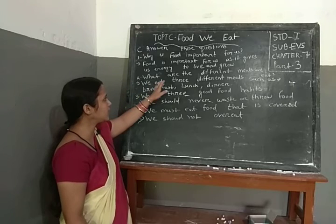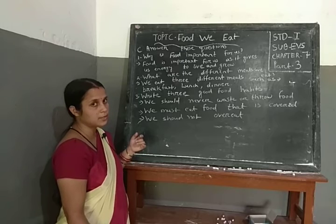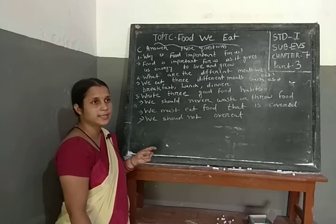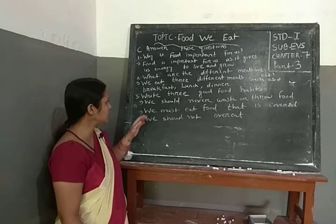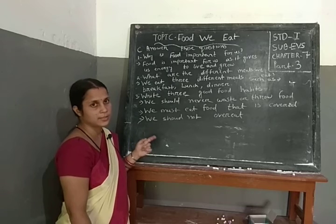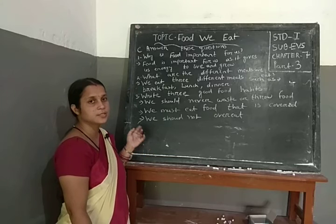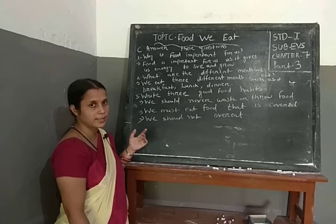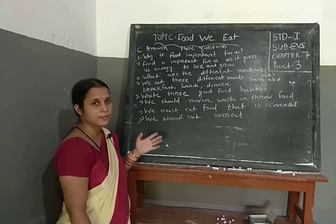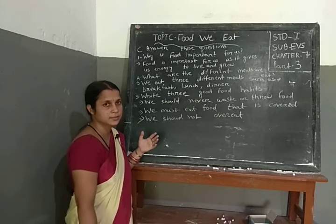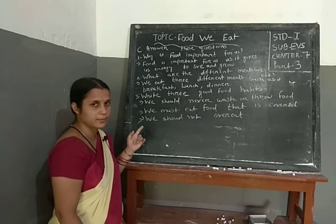Come to question number 2: what are the different meals we eat? We eat three different meals in a day — breakfast, lunch, and dinner. The food we eat in the morning is called breakfast, in the afternoon is called lunch, and at night is called dinner.